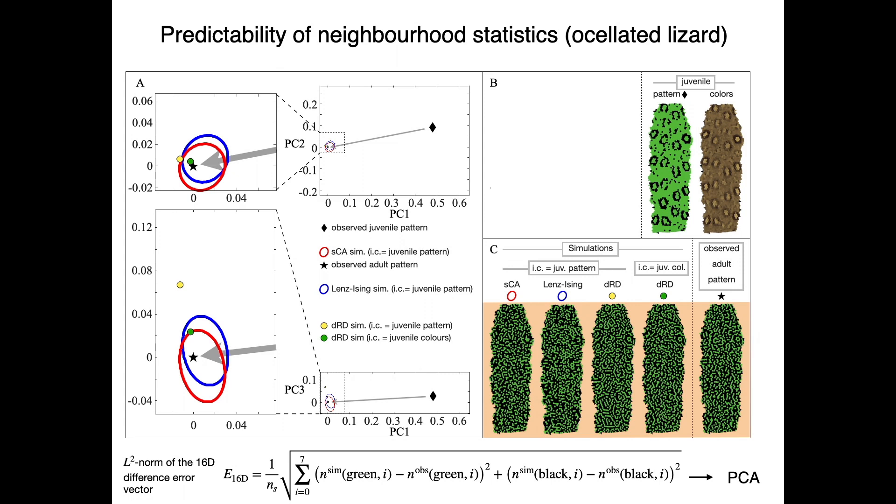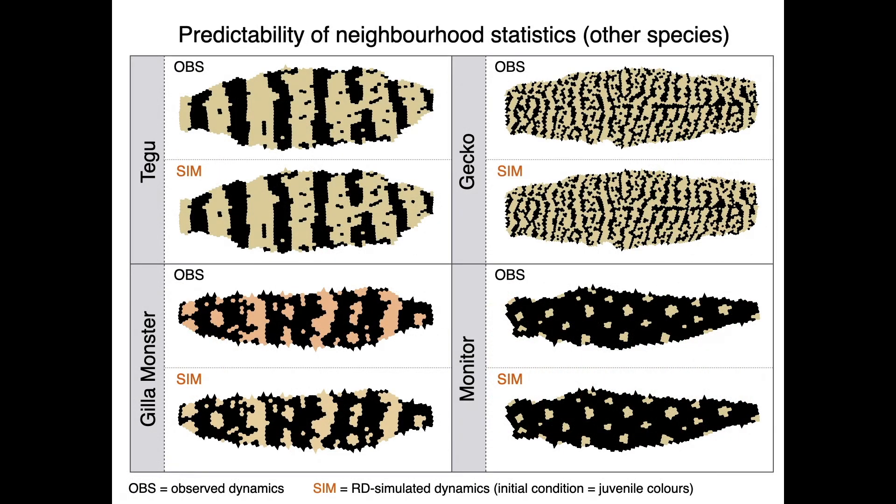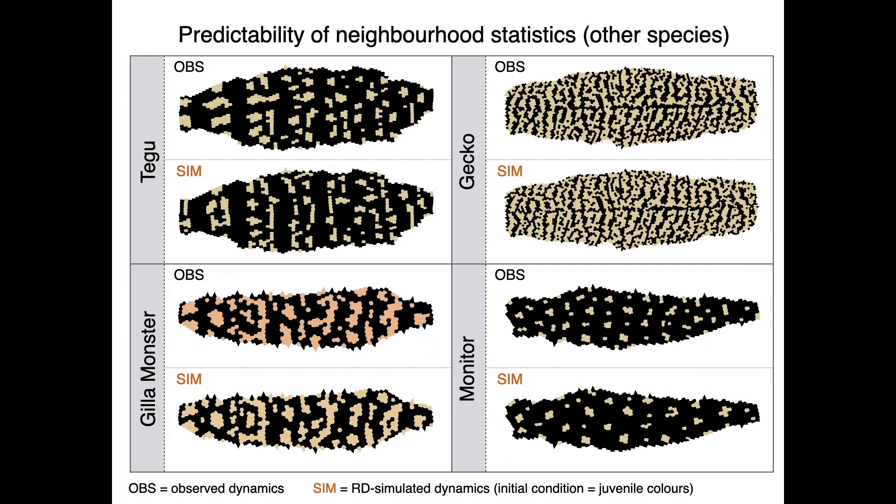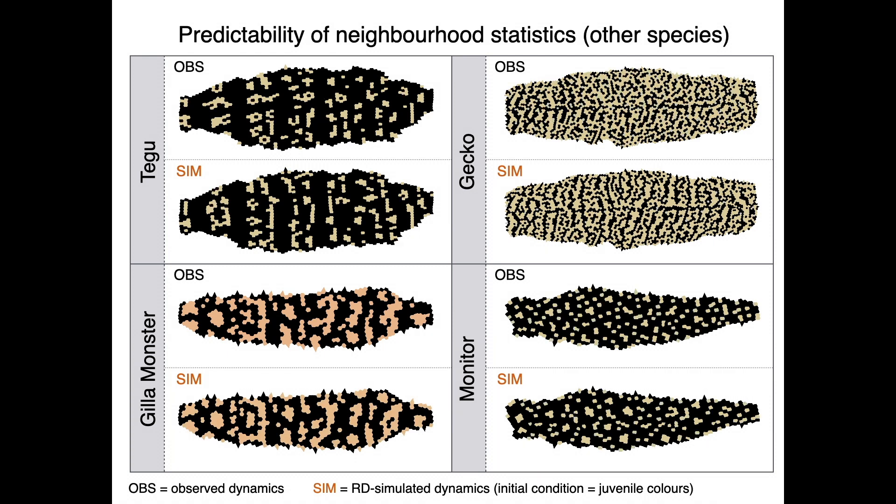We then perform the same analysis in the four additional species. Our results indicate that all models are good neighborhood configuration predictors in all species, despite the substantially different motifs of their patterns.